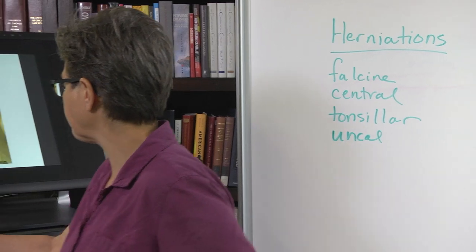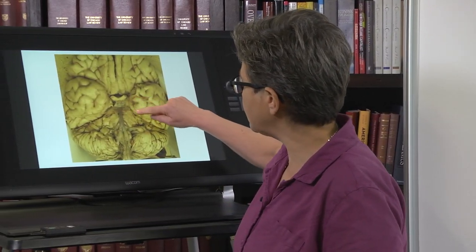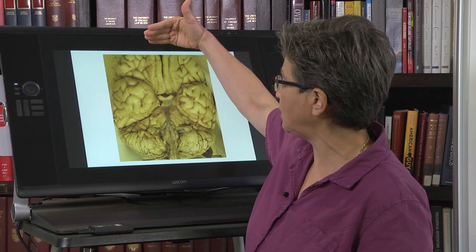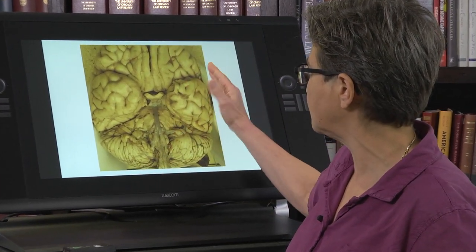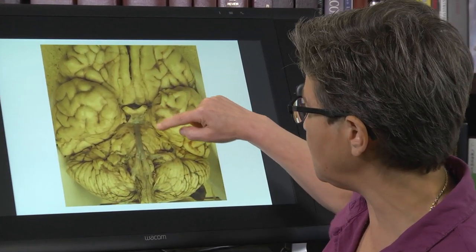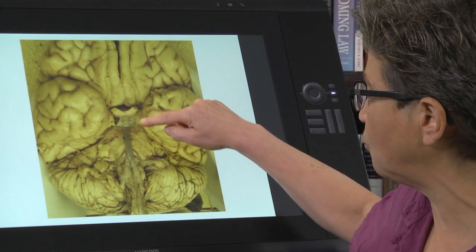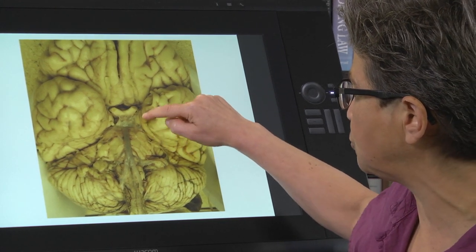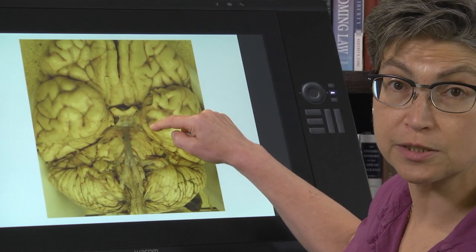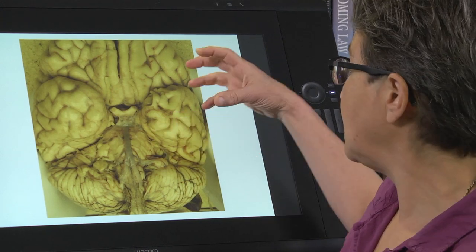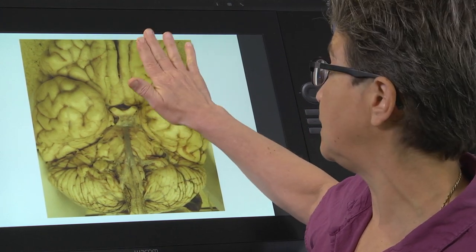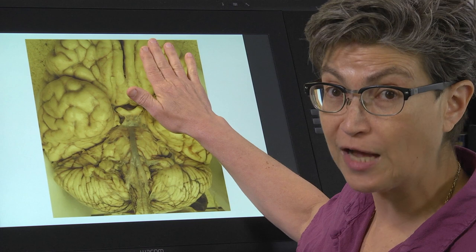Finally, there is an uncal herniation. We're looking at the base of the brain. Here's the front, here's the back, there's the temporal lobe, and on the medial side of the temporal lobe is this little outpouching which is called the uncus.